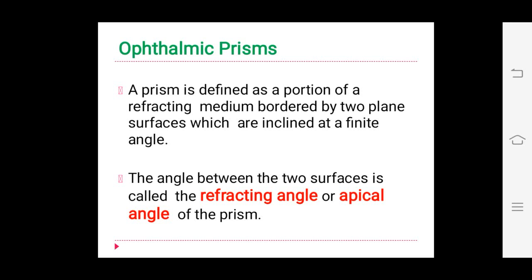What is an ophthalmic prism? A prism is defined as a portion of refractive medium bordered by two plane surfaces which are inclined at a finite angle. As you already know, a prism has two portions: the base and the apex. The angle between the two surfaces at the apex is called the refracting angle or apical angle. Since refraction also takes place at the apex, it is also called the refracting angle.